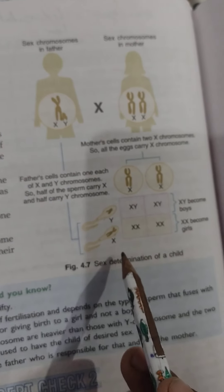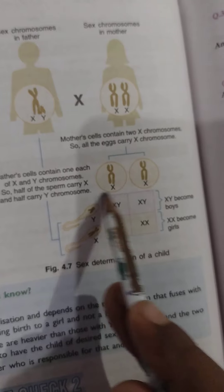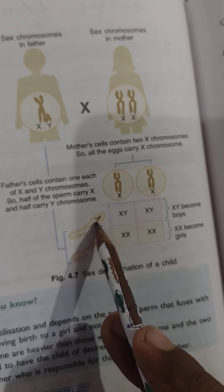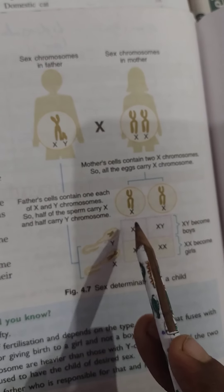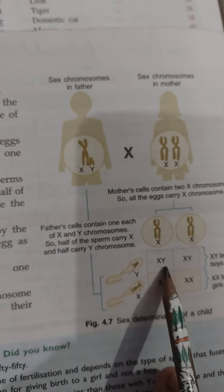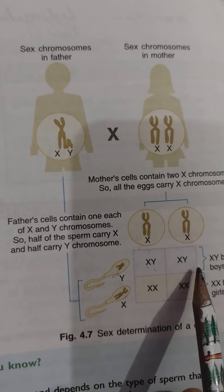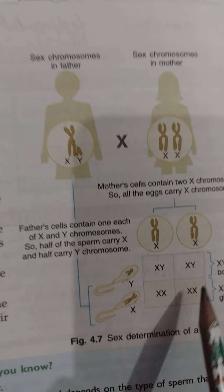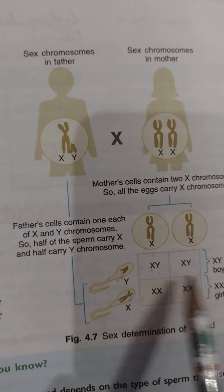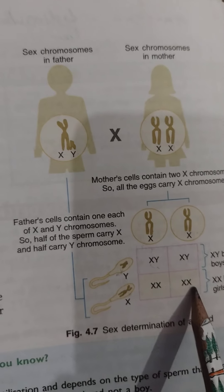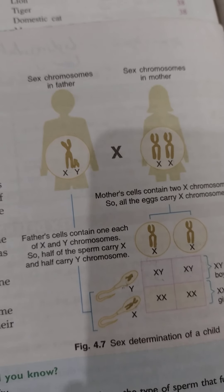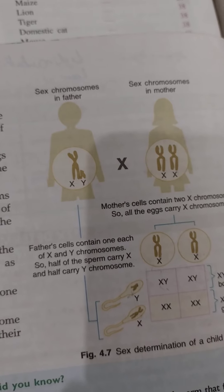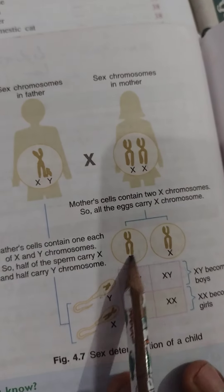When the cross takes place, as shown in the checkerboard, if an X sperm fuses with the ovum — which will always carry an X chromosome — the result is XX: a female child. If a Y sperm fuses, the result is XY: a male child. Out of four children, two may be male and two may be female, giving 50% chances of being male or female. This phenomenon is known as sex determination.